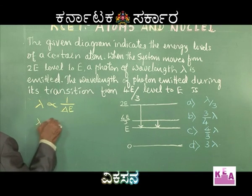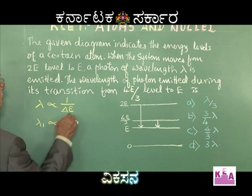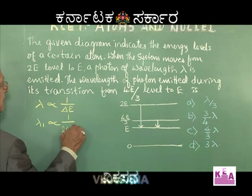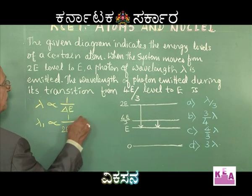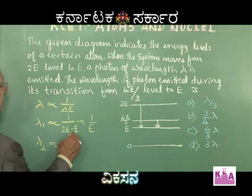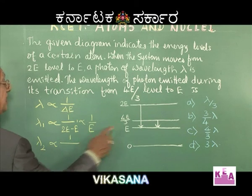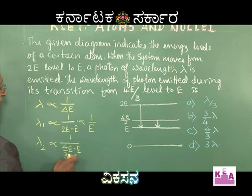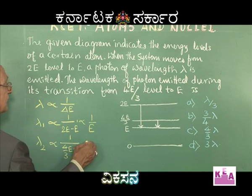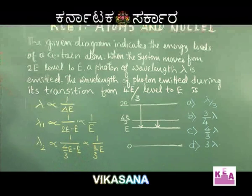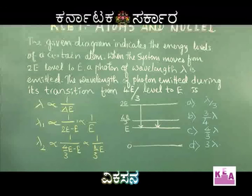Using this, λ₁ ∝ 1/(E₂ − E₁) = 1/(2E − E) = 1/E. For the second transition, λ₂ ∝ 1/((4E/3) − E). The energy difference is 4E/3 − E = E/3. So λ₂ ∝ 1/(E/3) = 3/E.